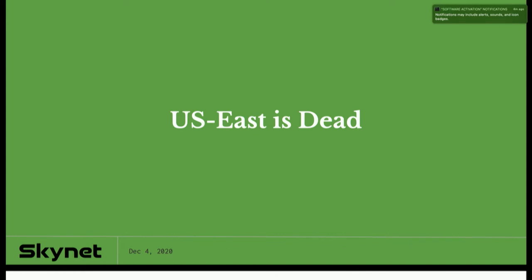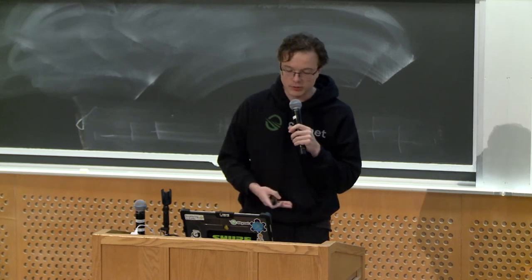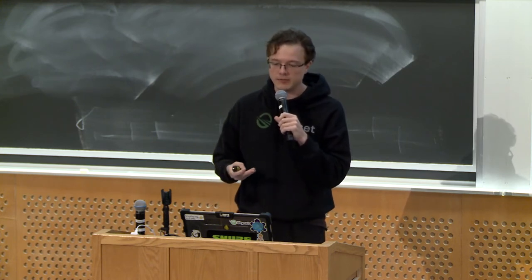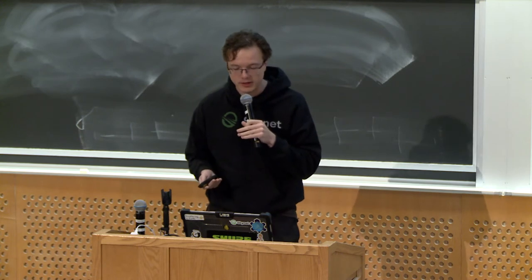Less than a month later, in June 2020, we found the entire US East cluster was just gone. Users were reporting they couldn't get in. Europeans and people in California said it was still there, but I'm in Boston and it's not there. We SSH'd into our servers — it didn't work. Our servers had been unplugged. Our US East provider, IONOS, had pulled the plug on us for phishing. As we investigated, it turned out the phishing website deployed was genuine — targeting IONOS admin credentials. Understandably, IONOS was not very amused.